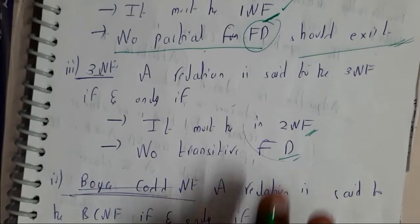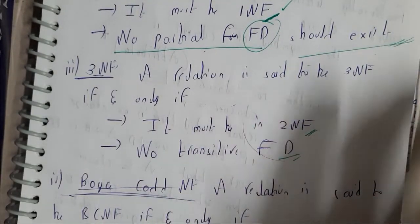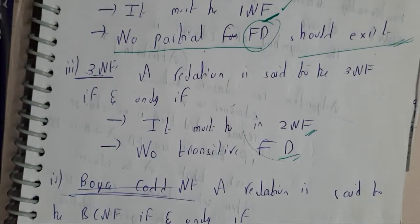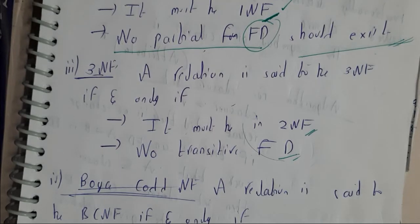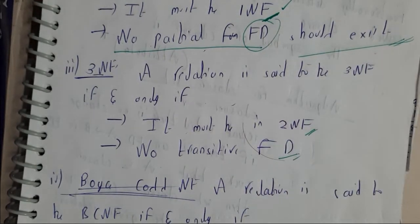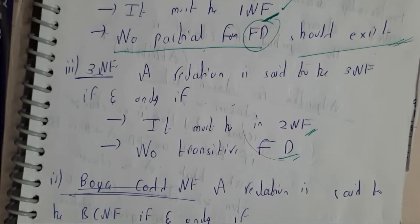So I hope everyone got a small introduction to the normal forms. In the next tutorial we will be going through the closure set of attributes. Once we learn the closure set of attributes then we can learn about key, super key, alternative key and all those concepts. Thank you, thanks for watching.